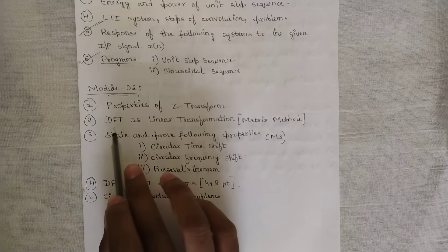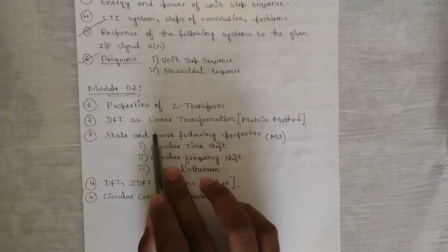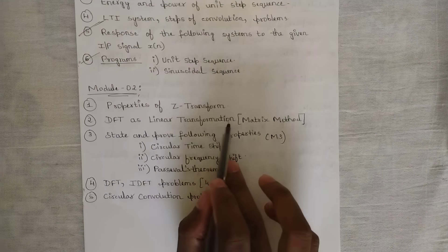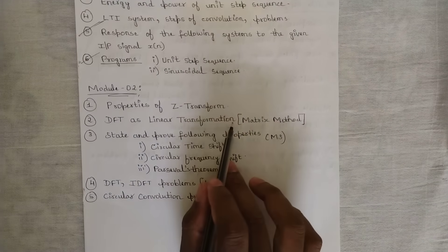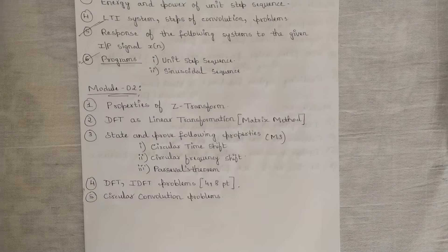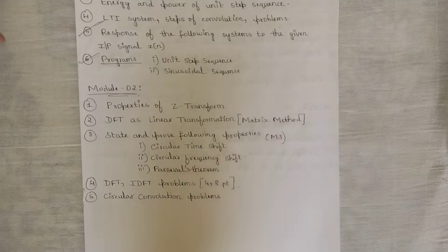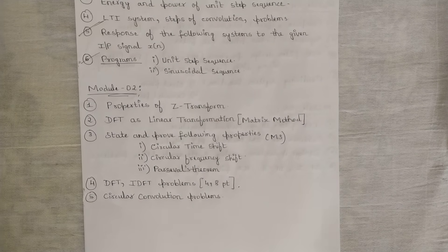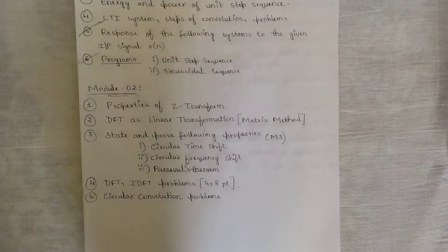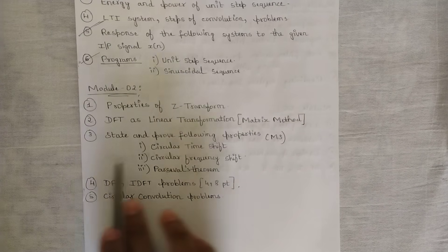Next is the derivation of how the DFT — that is discrete Fourier transform — is formed as a linear transformation. I have covered this in one of my videos: DFT as a linear transformation using the matrix method. You should know how the DFT can be solved using the matrix method, including the derivation with respect to the twiddle factor W. This is also a multiple times repeated question.